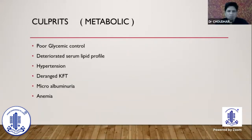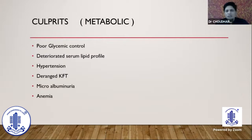Whenever there is a sub-optimum response to anti-VEGF injection, we need to find out the reason. Certain culprits include poor glycemic control, deteriorated serum lipid levels, hypertension not properly controlled, and deranged kidney function tests. Microalbuminuria is an important condition in which DME really becomes recalcitrant. Anemia is an often ignored factor — patients having anemia usually have this kind of refractory DME.